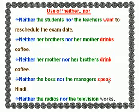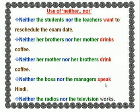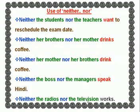'Neither her mother nor her brothers drink coffee' — here mother is singular, brothers is plural, but because the plural noun comes next to the verb, the verb does not take on S: 'her brothers drink.' Similarly, 'neither the boss nor the managers speak Hindi' — the plural subject comes next to the verb, so the verb does not take on S. 'Neither the radio nor the television works' — television is singular and comes next to the verb, so the verb agrees with television: 'works.'